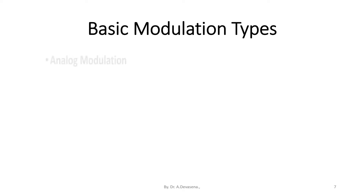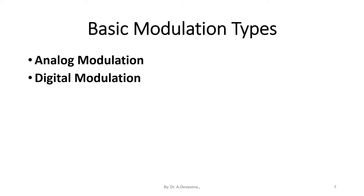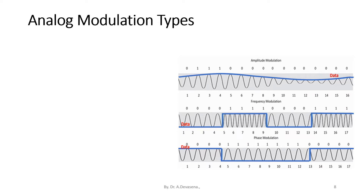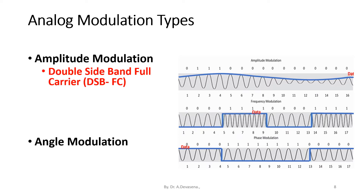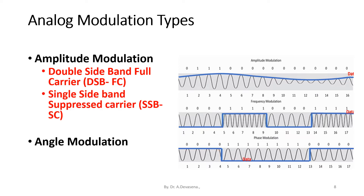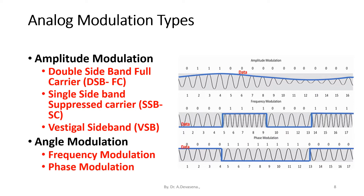Modulation types are classified into three basic categories: analog modulation, digital modulation, and pulse modulation. Analog modulation is broadly classified into amplitude modulation and angle modulation. Amplitude modulation is further classified into double sideband full carrier (DSBFC), single sideband suppressed carrier (SSBSC), and vestigial sideband (VESB). Angle modulation is further classified into frequency modulation and phase modulation.